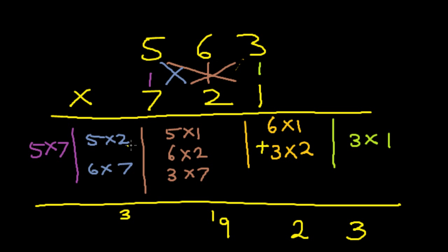Next, I'll multiply this. 5 times 2 is 10. 6 times 7 is 42. 42 plus 10 is 52. 52 plus 3 is 55. 7 times 5 is 35. 35 plus 5 is 40. So the answer is 405,923.